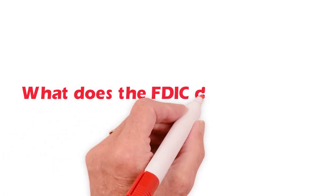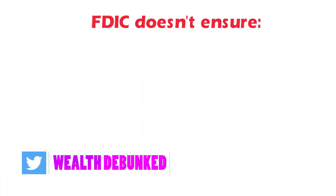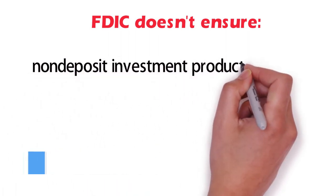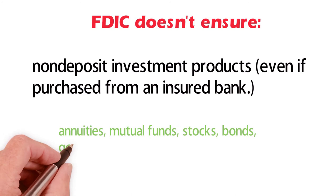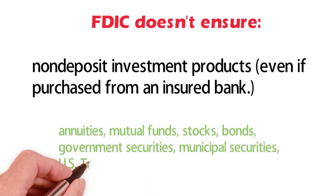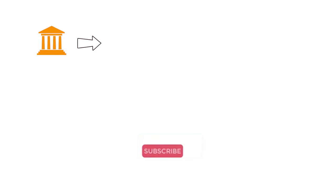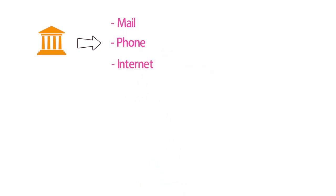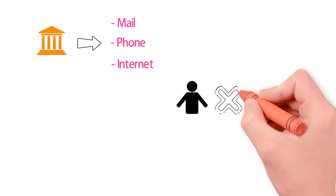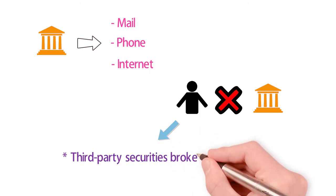What does the FDIC not cover? The FDIC does not insure non-deposit investment products, even if they were purchased from an insured bank, including annuities, mutual funds, stocks, bonds, government securities, municipal securities, and US Treasury securities. These products may be offered in a financial institution's lobby, through the mail, over the phone, or through the internet. Most often, the people selling these products are not bank employees but employees of third-party securities brokers, dealers, or insurance companies.